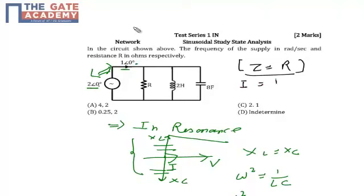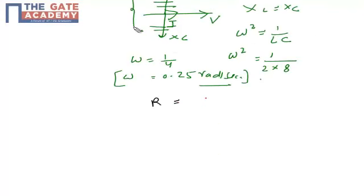The current I is nothing but V by Z, which in this case is V by R. By this formula, if I calculate R, then R equals V by I, which is 2 by 1, which is 2 Ohms.